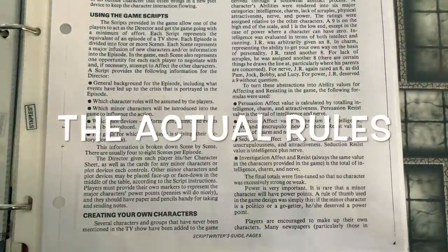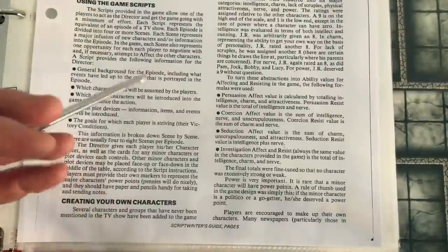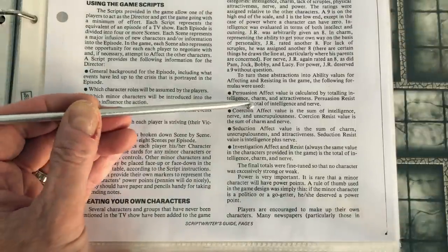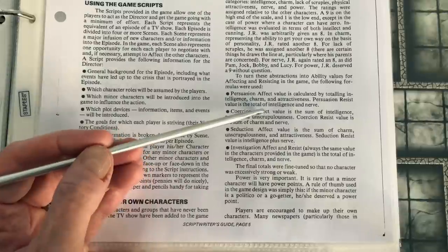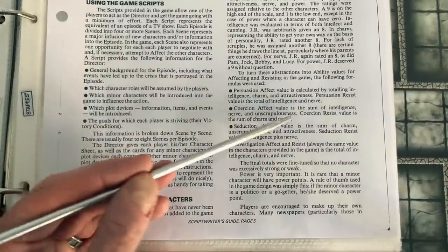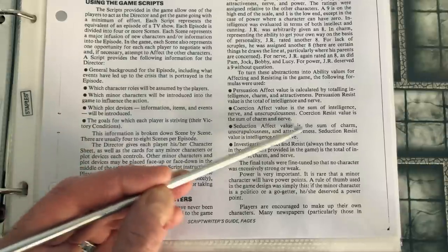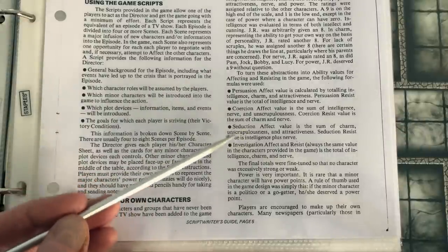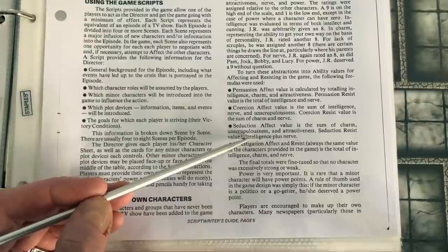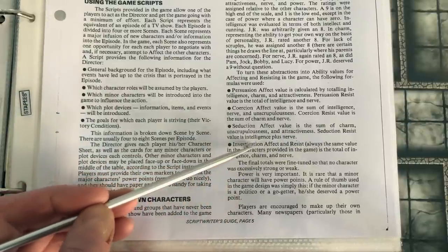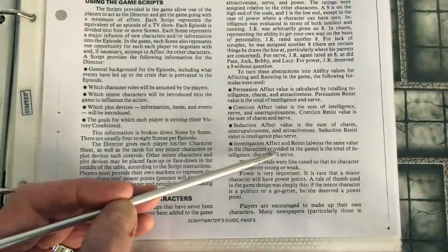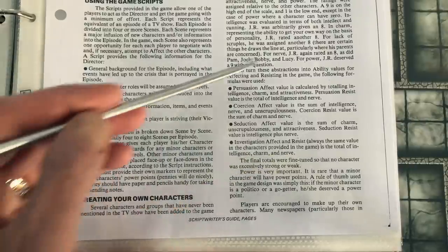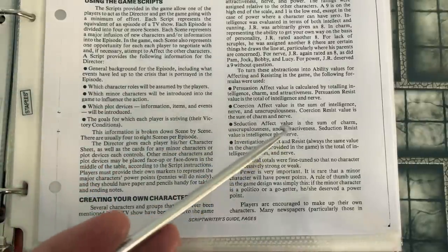I want to conclude here by giving you a look at the actual rules so that you can have them in mind if you want to modify them for some set that you're using. Persuasion affect value is calculated by totaling intelligence, charm, and attractiveness. The resist value to persuasion is the total of intelligence and nerve. Coercion is the sum of intelligence, nerve, and unscrupulousness, and the resist value on coercion is the sum of charm and nerve. The investigation value is going to be the same for each character and will be the total of intelligence, charm, and nerve.